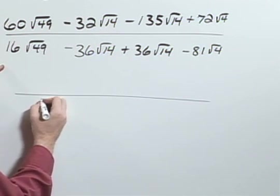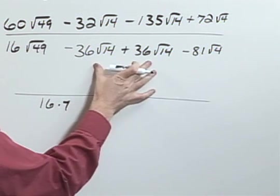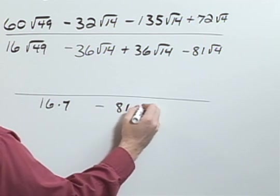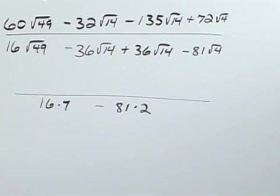So this becomes 16 times 7, this all drops out, minus 81 times 2. Notice again, all of those square roots are gone in that denominator.